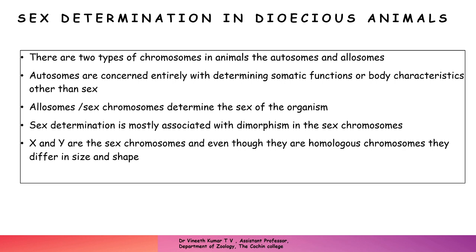Sex determination is mostly associated with the dimorphism of the sex chromosome. Sex chromosomes are generally represented by the alphabets X and Y. Even though they are homologous chromosomes, they are different in their size and shape when it comes to humans. Normally homologous chromosomes have similar structure and similar size, but only in the case of sex chromosomes, X and Y, the size and shape are not the same — they are different.